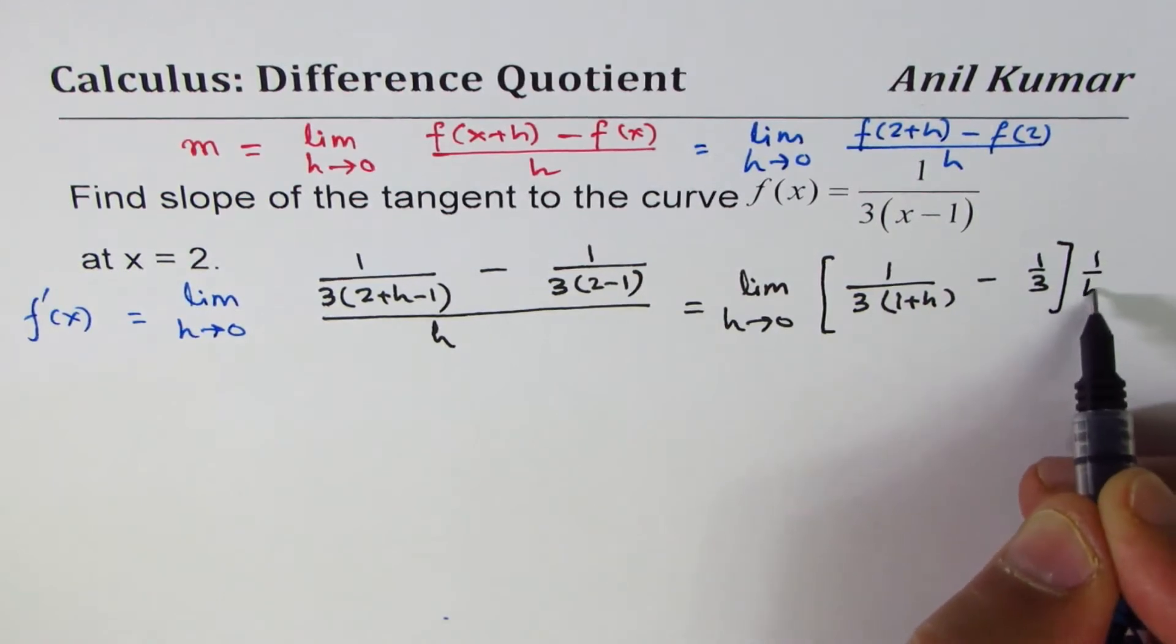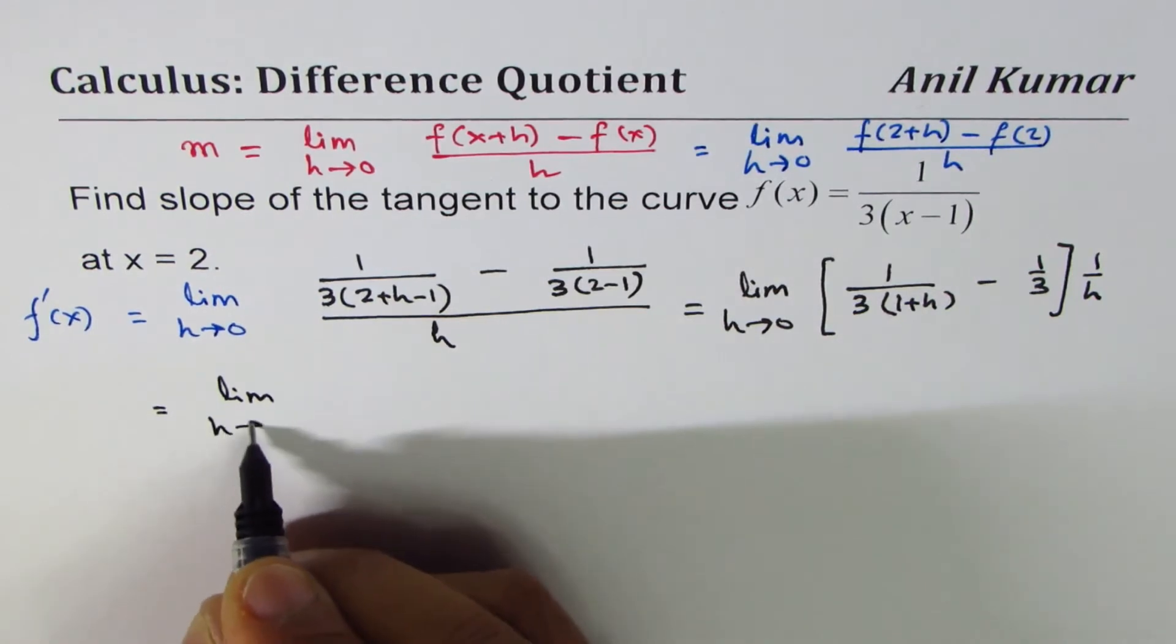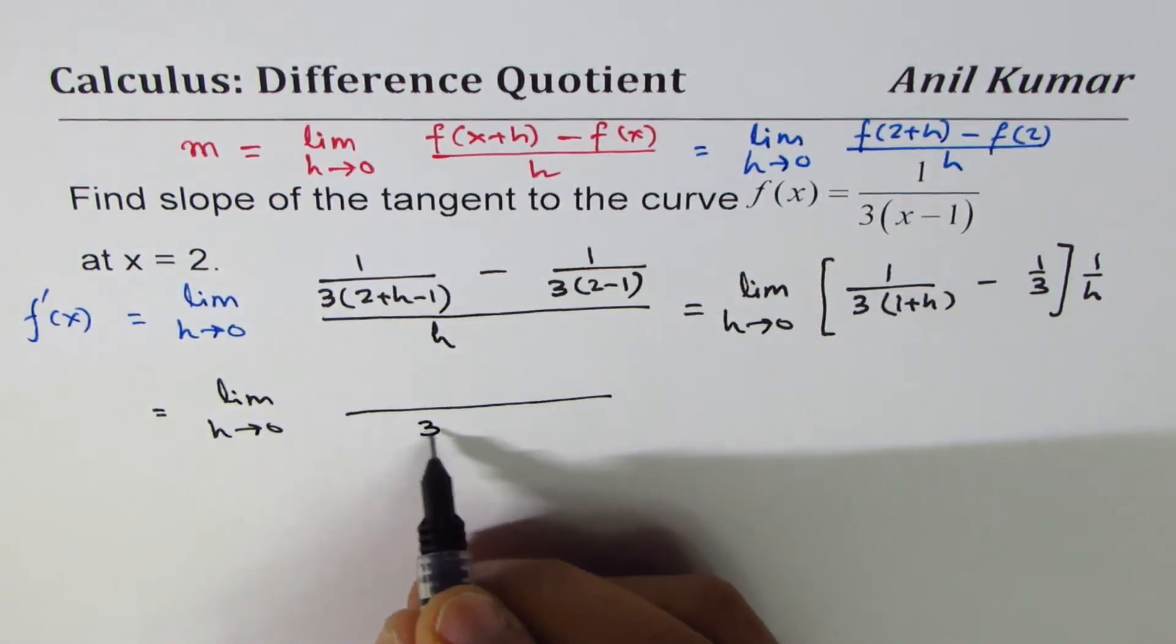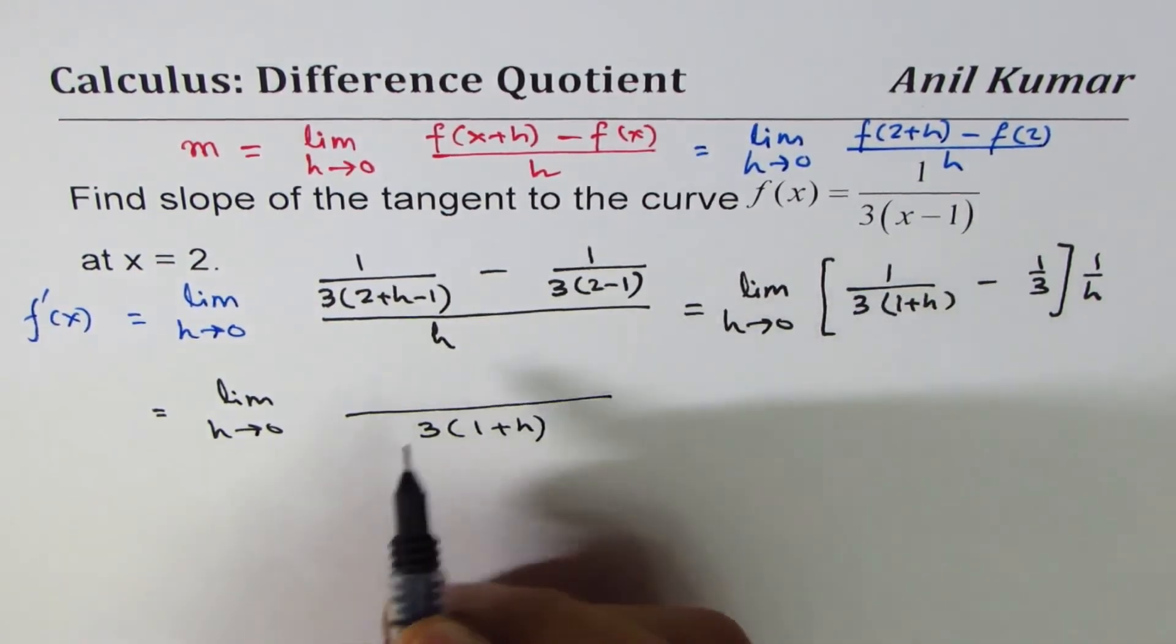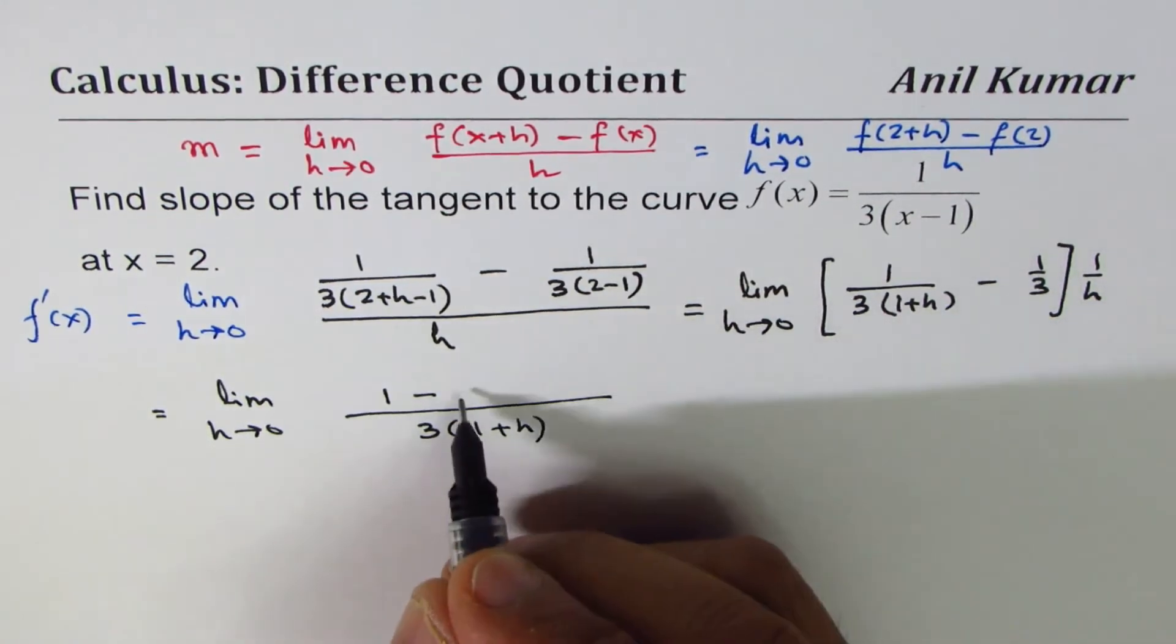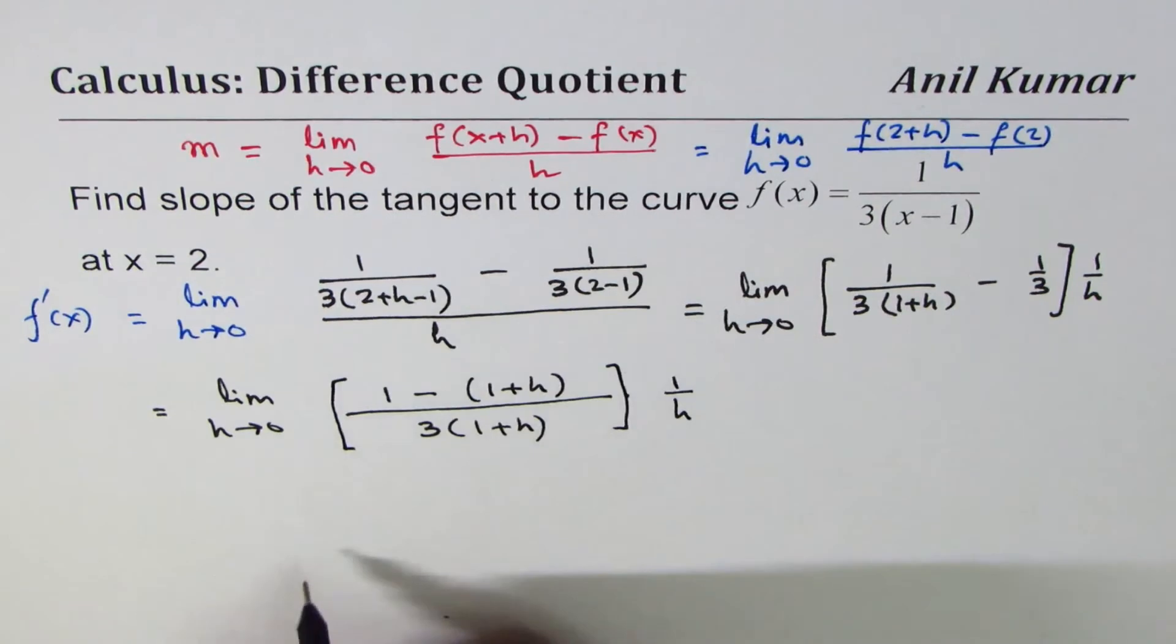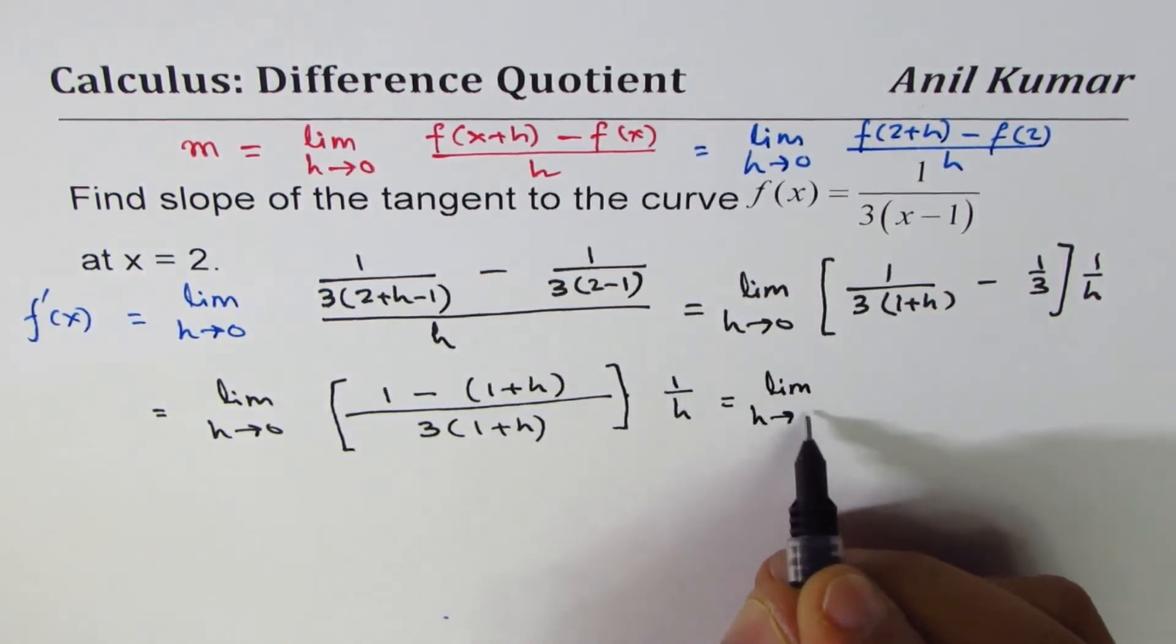It is limit h approaches 0, so we can take common denominator. The common denominator is 3 times 3 times (1+h). That will be 1 minus 1 gets multiplied by (1+h), so basically (1+h) times 1 over h. That equals limit h approaches 0...